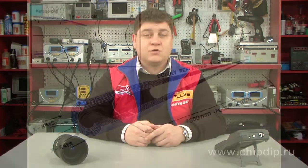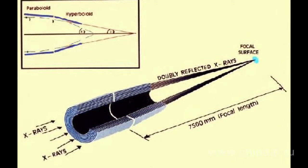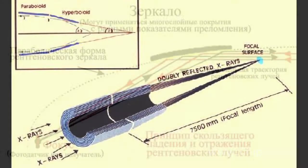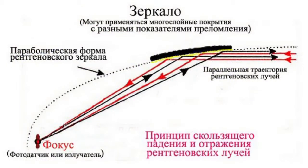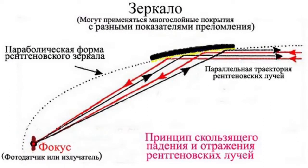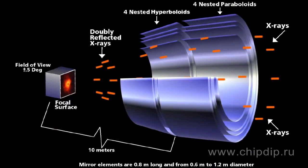X-rays have to propagate parallel to the mirror surface to be reflected. Such a mirror takes the form of a convergent hollow tube with a parabolic or hyperbolic surface where the X-ray beam converges. For waves with wavelengths ranging from 2 to 50 nm, no standard X-ray mirrors are available. Such mirrors are made of hundreds of layers of special ultra-pure materials, ceramics and metal foil.